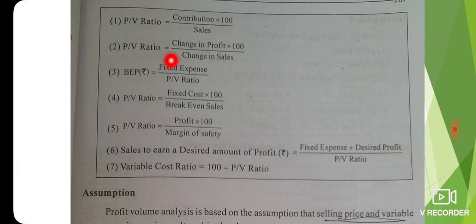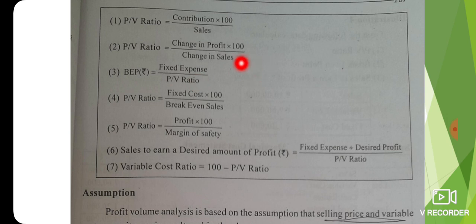PV ratio is contribution by sales, or change in profit by sales into 100. The break-even point is fixed expenses divided by PV ratio.